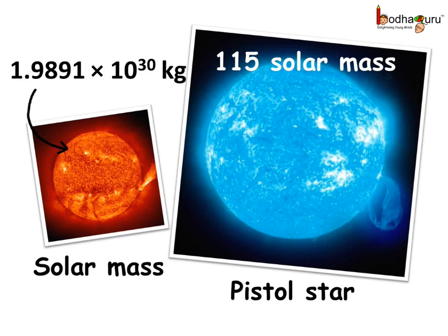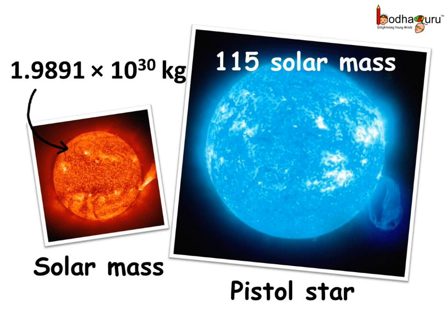And it is called the solar mass. One of the brightest stars in the Milky Way is the blue Pistol star, and its mass is equal to 115 solar mass. Can we write that weight in kilograms without exponents? Well, it would take a long time to count the exact number of zeros. And hence we use the exponents.